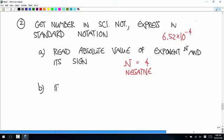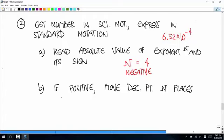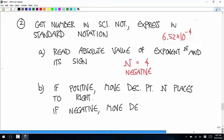And now if it's positive, move the decimal point n places to the right. If it's negative, move the decimal point n places to the left.